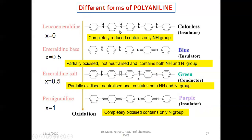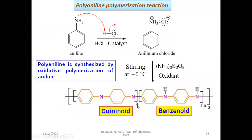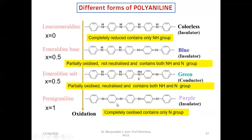If X equals 1, the benzenoid backbone will not be there. The formed polyaniline will be completely made up of quinoid benzene rings. With nitrogen atoms completely oxidized, it is a neutral substance, its color is purple, and it is also an insulator. This form is called Pernigraniline. So if you get a colorless product, you are getting Leuco-Emeraldine; if you get a purple colored product, you are getting only quinoid structure — that is Pernigraniline, also an insulator.